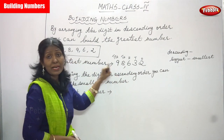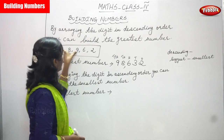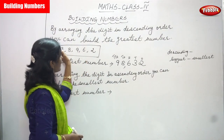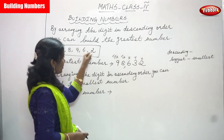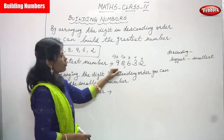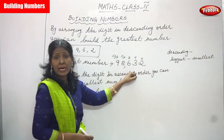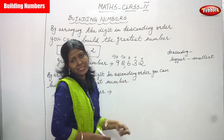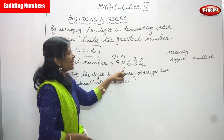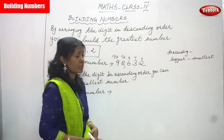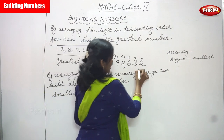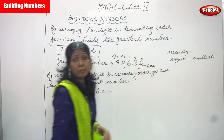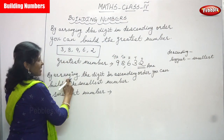This is the greatest number I formed. From this box, some numbers were given, and from those numbers I formed the greatest number. Ninety-eight thousand six hundred and thirty-two is the right answer. This is the greatest number, or the biggest number.